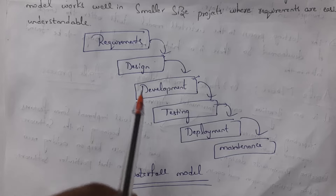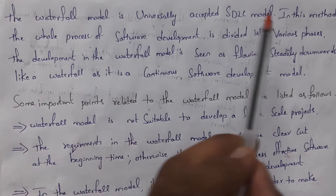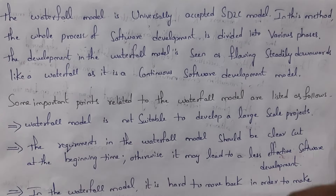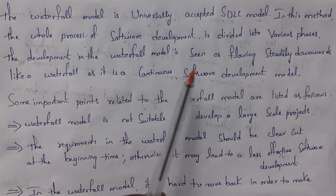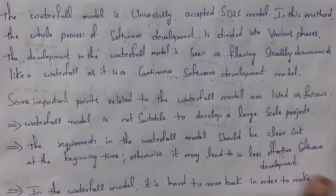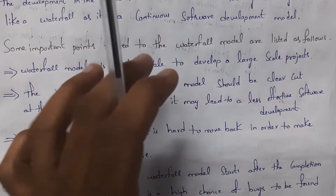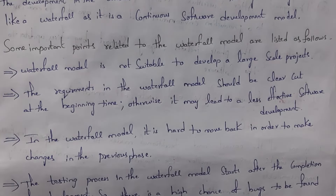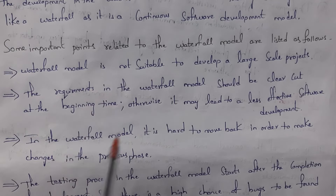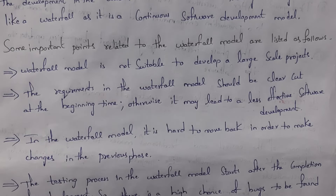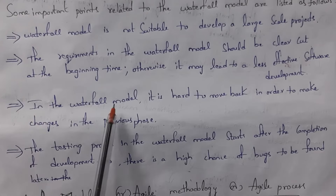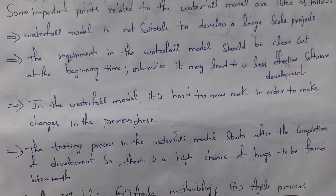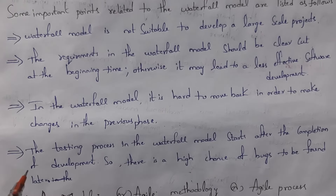The waterfall model is a universally accepted software development life cycle model where development flows steadily downward like a waterfall. Key points to remember: the waterfall model is not suitable for large scale projects; all requirements must be given clearly at the beginning — you cannot add requirements in the middle; it is hard to go back to make changes in a previous phase; and testing starts only after development is complete, so many bugs may be found in the testing phase.